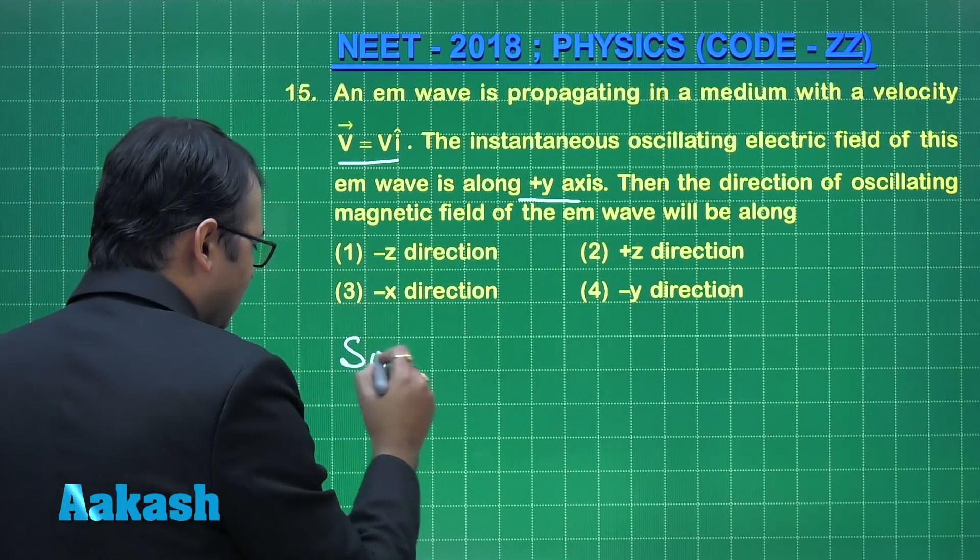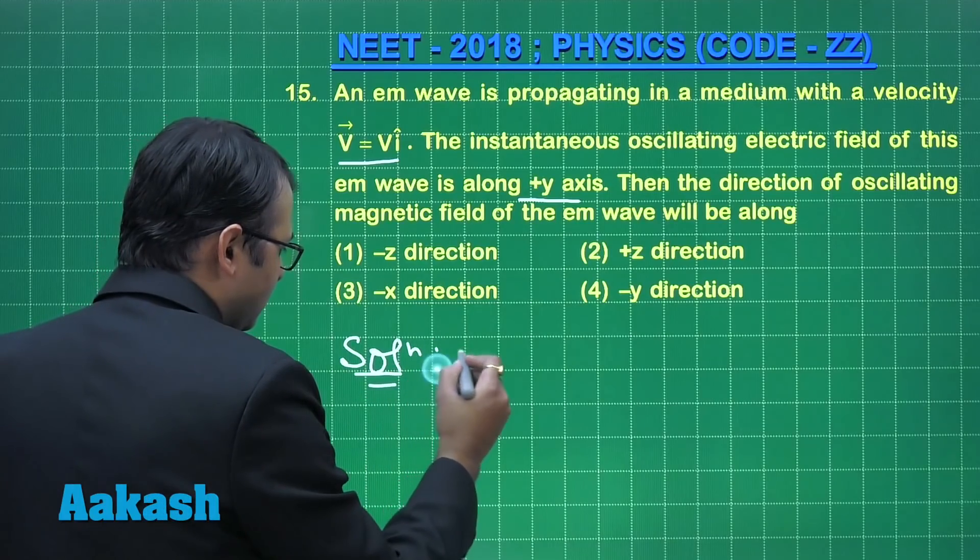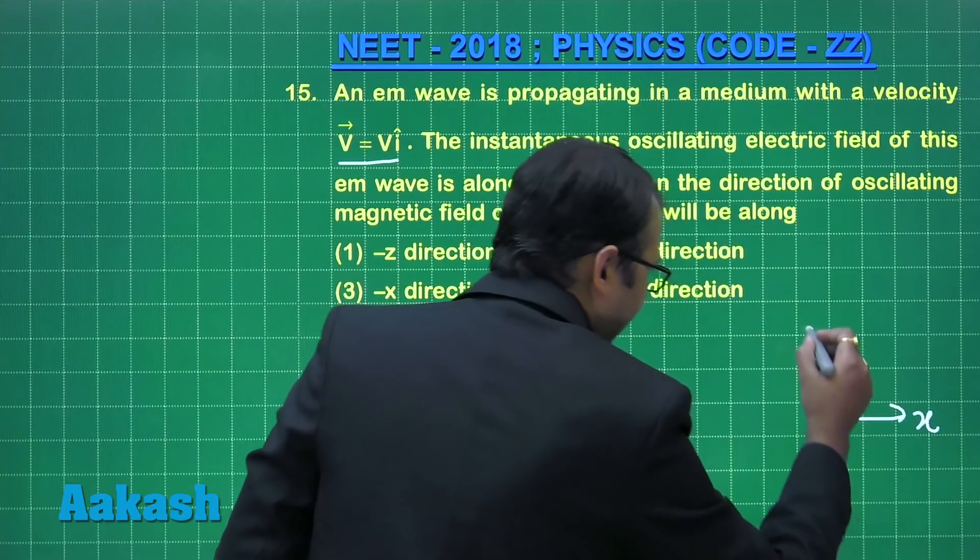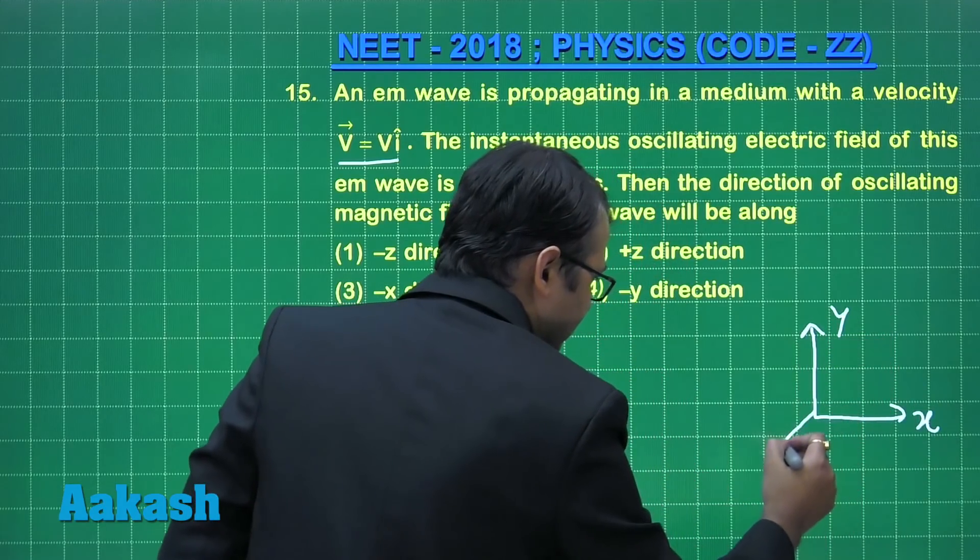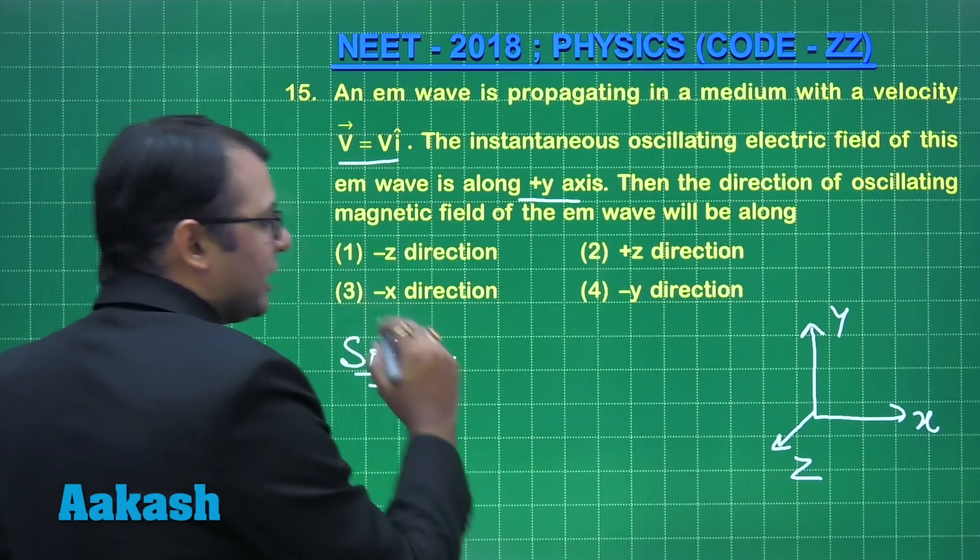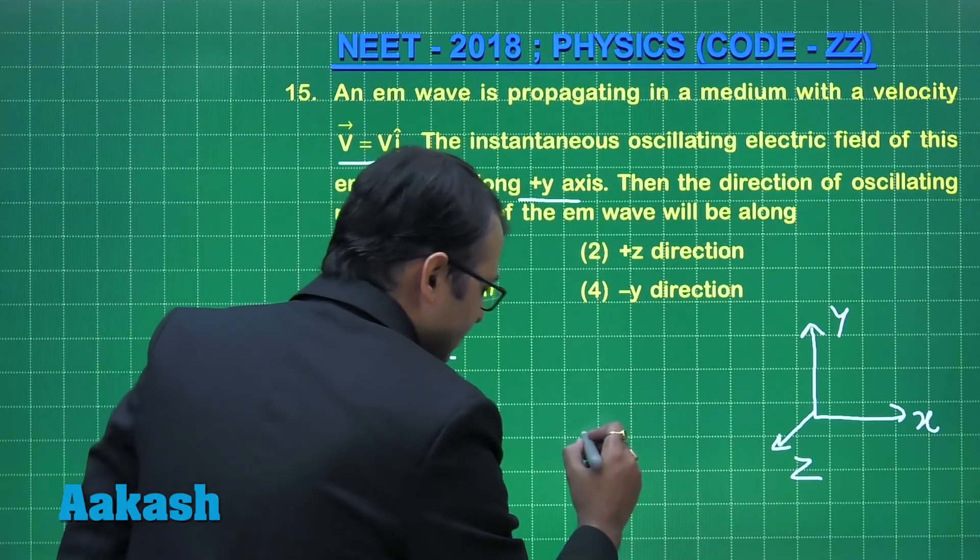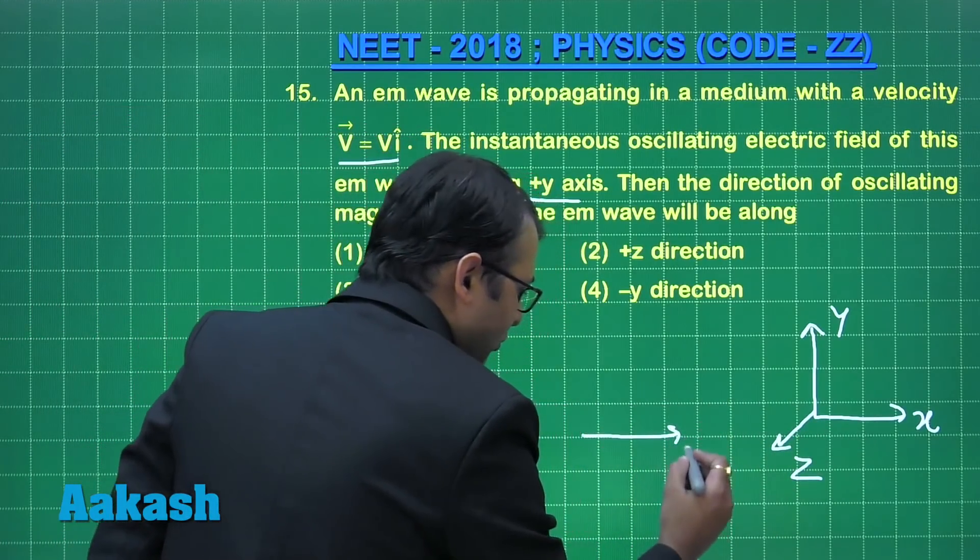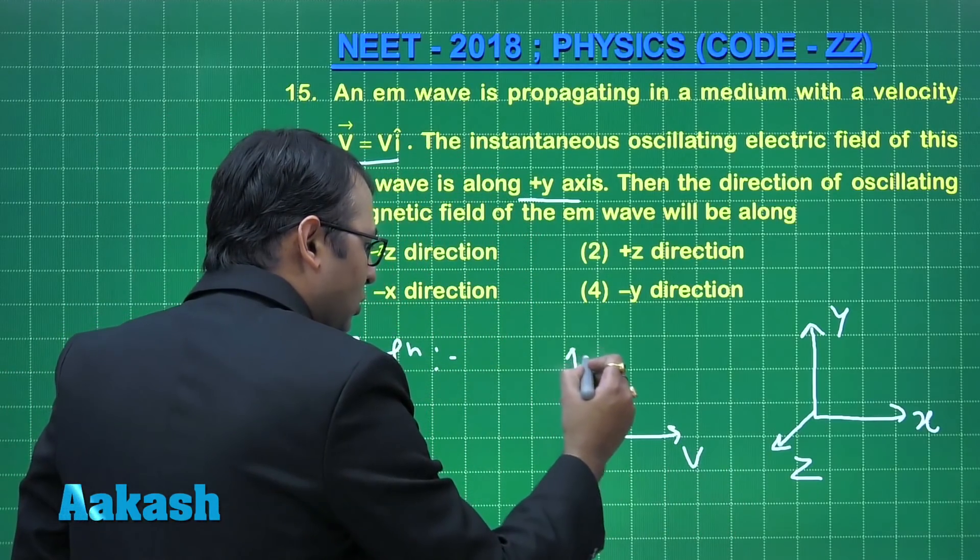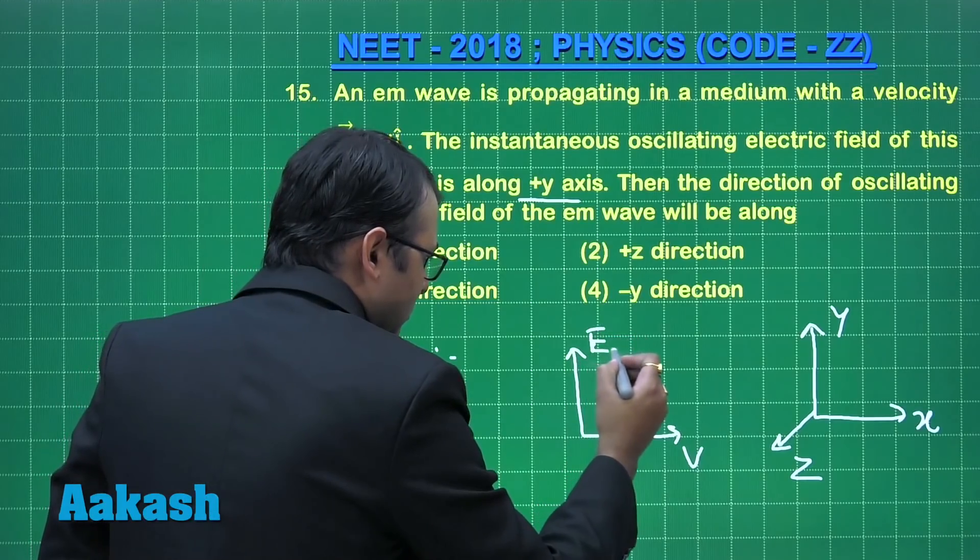Let's see the solution. For reference, if I take x, y and z axis. So the wave is moving along x-axis, the electric field is along y-axis.